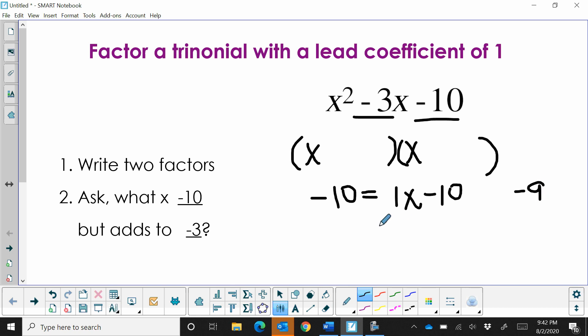If we multiplied negative 1 times positive 10, we would add those and get a positive 9. So it can't be a 1 and a 10.